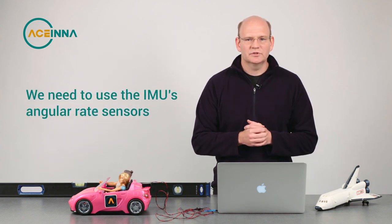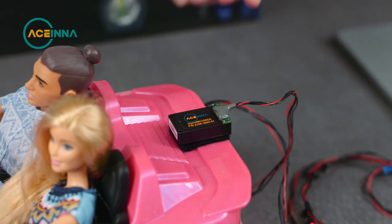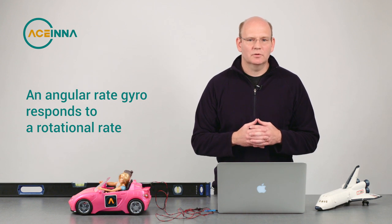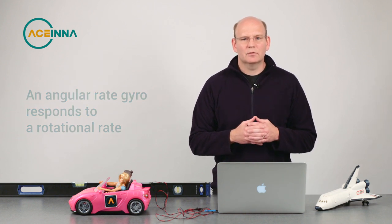We need to use the IMU's other three sensors, the angular rate sensors, which are commonly also called gyros. An angular rate gyro responds to a rotational rate and that rotation rate can be integrated to an angle.